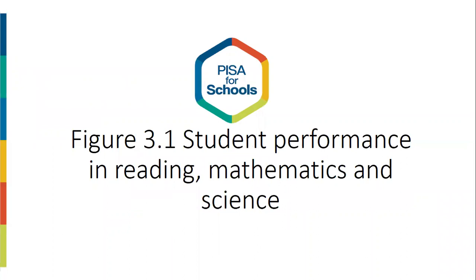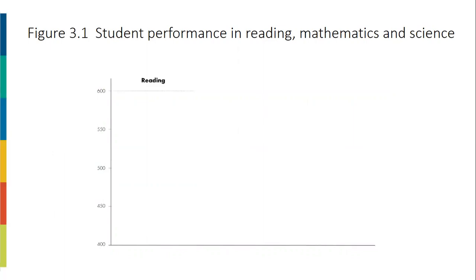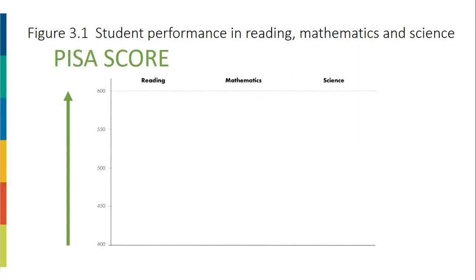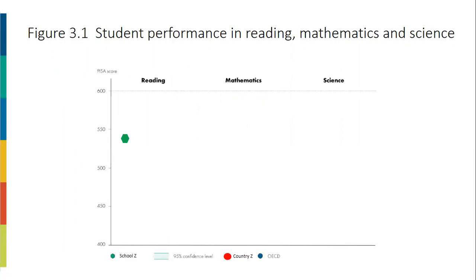Chapter 3 provides an overview of your school's performance on the PISA-based test for schools. It focuses on the performance of different groups of students in your school and the kinds of tasks that they can perform in each domain. In Figure 3.1, you can see your school's results in Reading, Mathematics, and Science. The vertical y-axis shows scores on the PISA scale — the higher the value, the better the result. Because the PISA-based test for schools uses the same framework as the Programme for International Student Assessment, known as PISA, we can compare the score obtained by schools to those obtained by countries. The green hexagon represents the performance of School Z on the PISA scale. The red dot represents the score of Country Z in PISA 2018. The blue dot represents the average performance of OST countries in PISA 2018. You can also see a semi-transparent green stripe with a caption that reads '95% confidence interval,' indicating the extent to which the difference between the performance of your school and your country, or the average of OST countries, is statistically different or not.